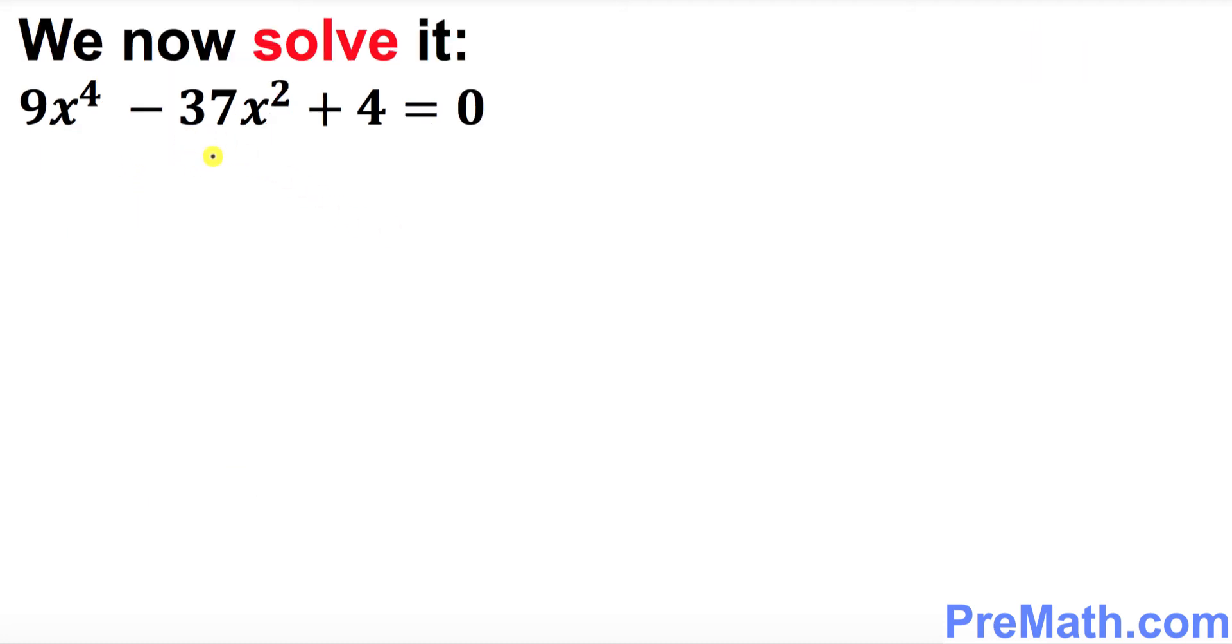And in the next step we are going to solve this polynomial. First of all I set it equal to 0. So in the previous step we already figured out the factors. Let's go ahead and put down those factors. Those factors were 3x minus 1 times 3x plus 1 times x minus 2 times x plus 2, set it equal to 0.